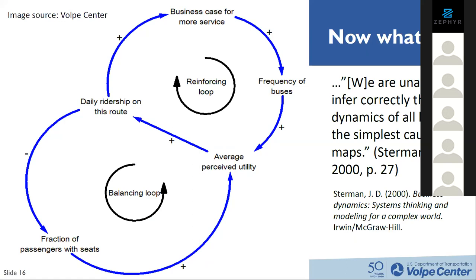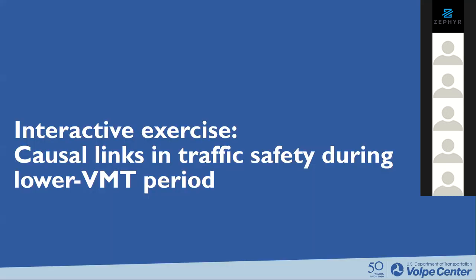John Sterman, one of the leading lights at MIT, wrote in a very influential system dynamics textbook published in 2000 that 'we are unable to infer correctly the dynamics of all but the simplest causal maps.' So if you were modeling something even like this simple transit example, you'd really need to run simulations. The point of the exercise we're about to get into is not to run simulations per se, but to show you how you set up something like this, which you can then simulate.